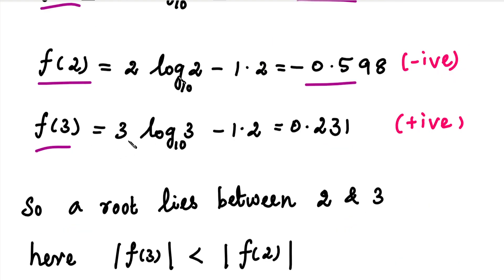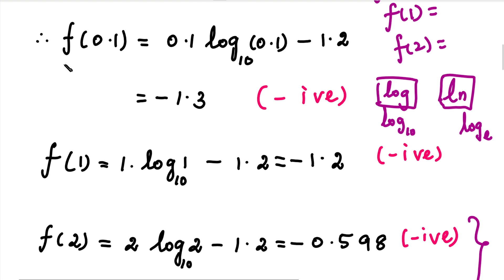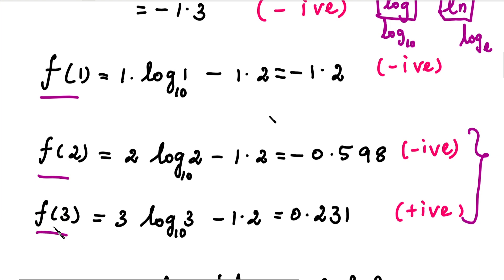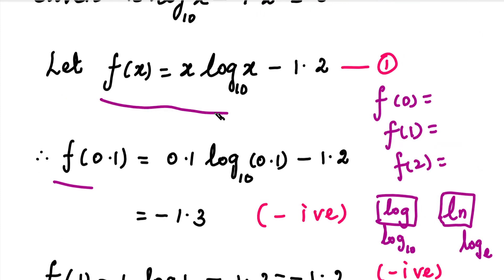So f(0.1), f(1), f(2), f(3) — these four values are all negative. We have entered these values into this function. However, this is not the case; f(x) = x·log(x) - 1.2. Once stored in the calculator, we can immediately evaluate these four values.